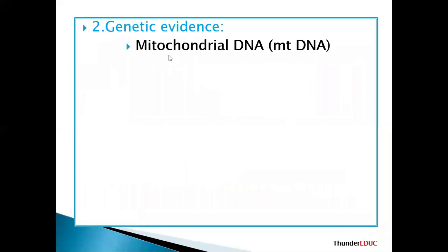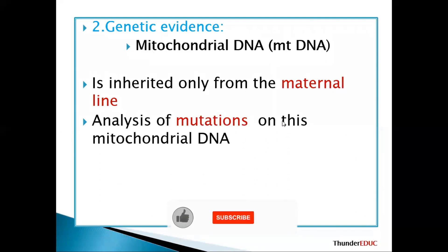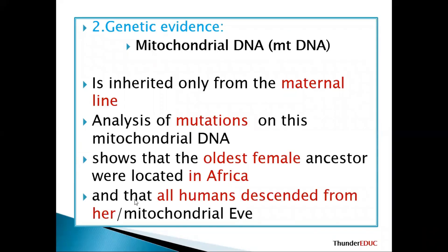Now for genetic evidence. Mitochondrial DNA — abbreviated mtDNA — is inherited only from the maternal line. Analysis of mutations in mitochondrial DNA shows that the oldest female ancestors are located in Africa. We say that the Mitochondrial Eve originated from Africa, and all humans descended from her. Do not confuse this Eve with the biblical Eve — this is the Mitochondrial Eve from genetic analysis.